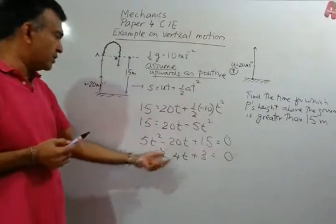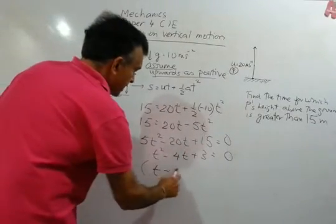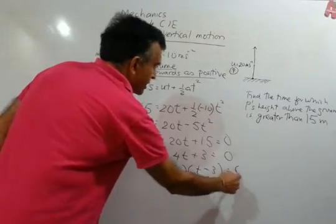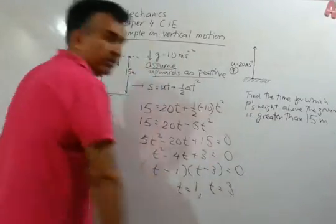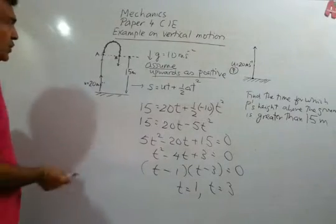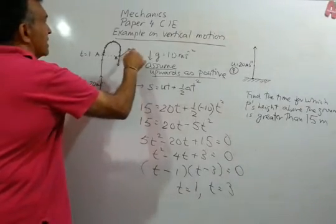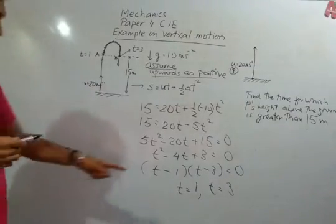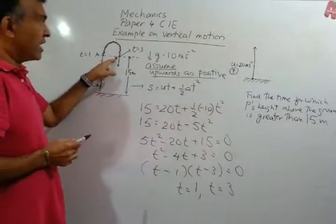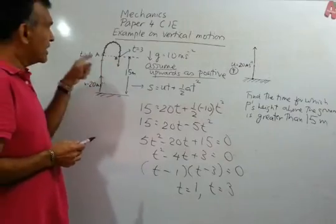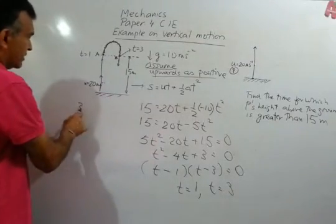Factorizing: (t − 1)(t − 3) = 0, so t = 1 or t = 3. At t = 1 the particle is at point A, and at t = 3 the particle is at point B. Therefore, to answer the question, the time for which P's height above the ground is greater than 15 meters is 3 − 1 = 2 seconds.